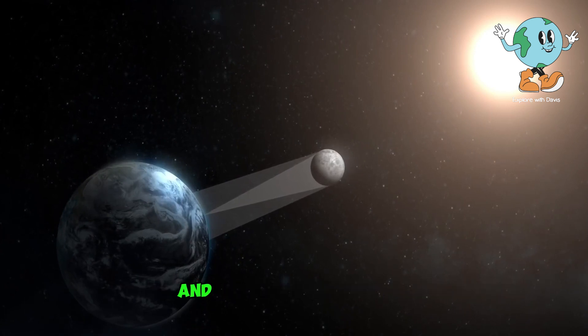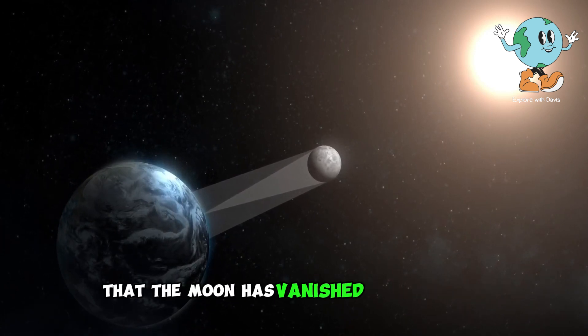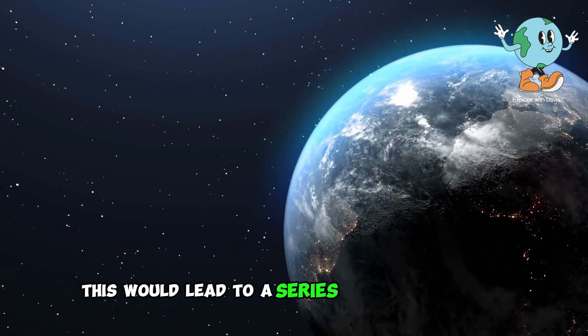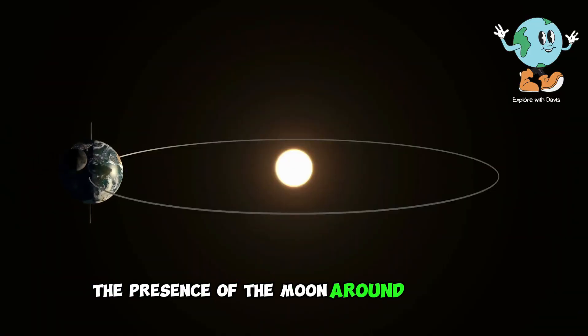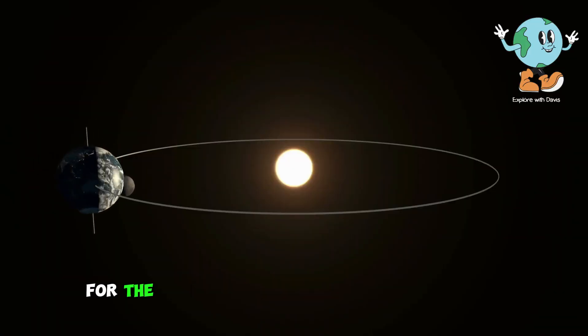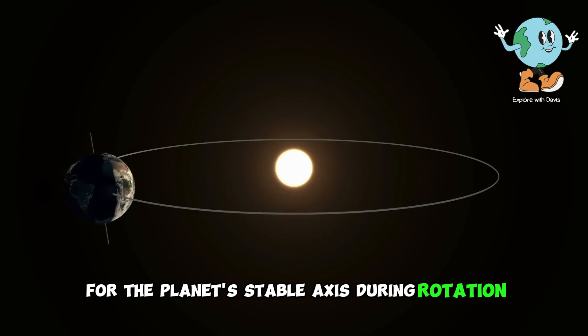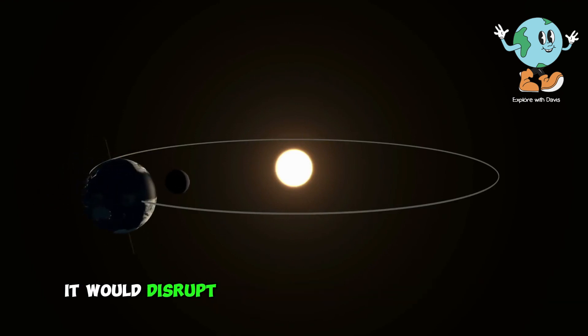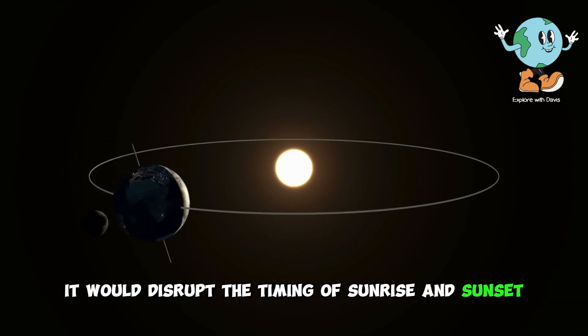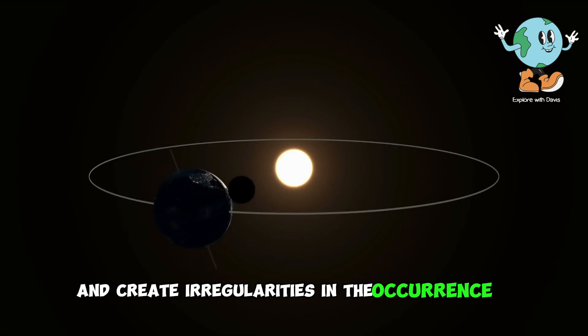Imagine waking up in the morning and suddenly discovering that the moon has vanished from the sky. This would lead to a series of indirect events, such as the disappearance of tidal patterns in various bodies of water. Furthermore, the moon's presence around Earth is the primary reason for the planet's stable axis during rotation. If the moon disappeared, it would disrupt the timing of sunrise and sunset and create irregularities in the occurrence of the four seasons.